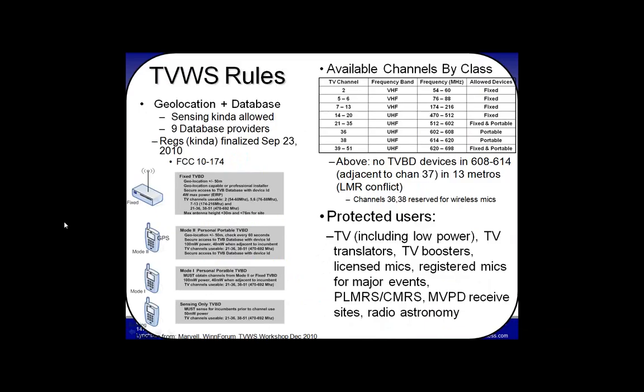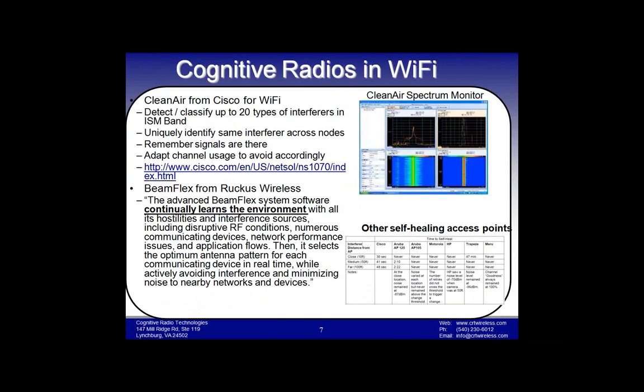In addition to TV white space secondary use, there's also unlicensed use where cognitive radios show up in unlicensed bands even if they're not always called cognitive radios. The ISM band becomes very interfered both from congestion from other 802.11 devices and from other kinds of systems. Different vendors have come up with smart solutions, with enterprise solutions deploying cognitive techniques between access points and management software to collaboratively figure out what kind of interference source is present — whether it's a rogue access point, microwave, or baby monitor.